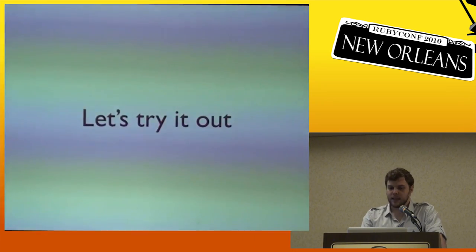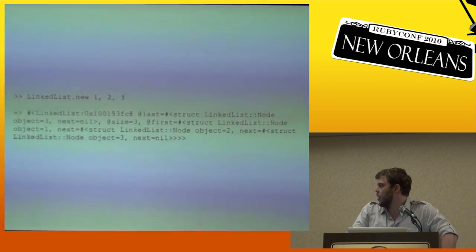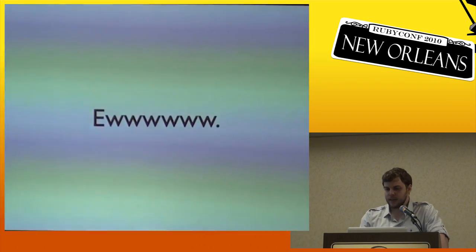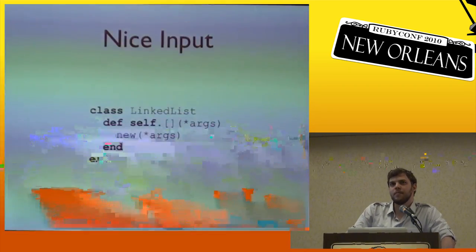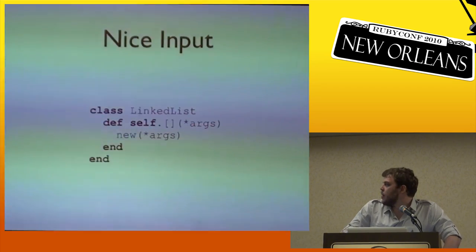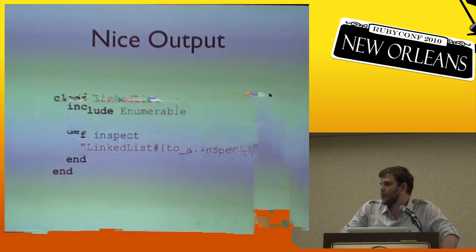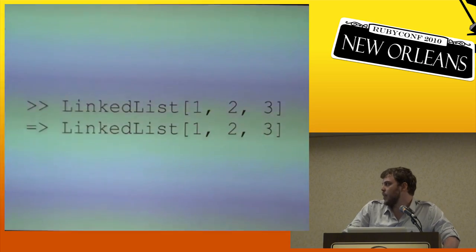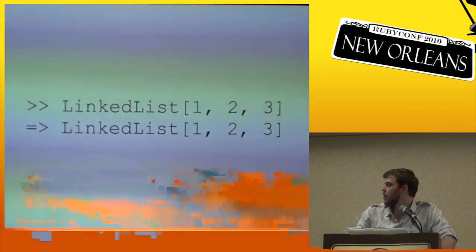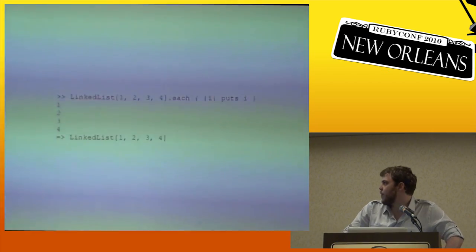Let's take our linked list class and create a linked list object. In IRB that's ugly, so let's write a nice constructor method that delegates to new, and a nice inspect method which is what IRB uses to print to the console. Now we can create a linked list and its IRB output looks much nicer.